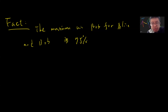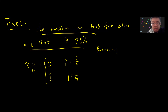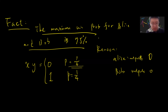The classical maximum probability is 75%. The reason is simple: x AND y equals zero with probability three-quarters, and equals one with probability one-quarter. So Alice can always output zero, and Bob can always output zero. They both output zero, and they win in exactly the three-quarters of cases where x AND y is zero. One can prove this is the maximum classical strategy — since Alice and Bob cannot communicate, this is the best they can do.